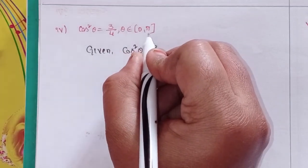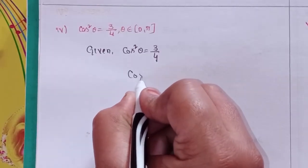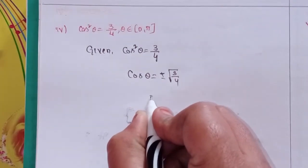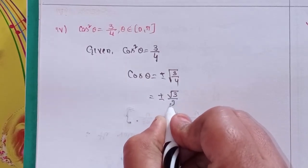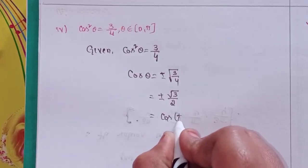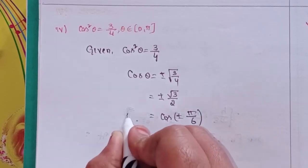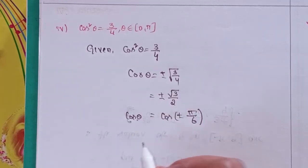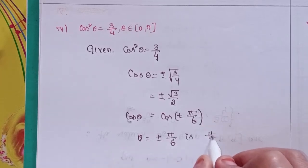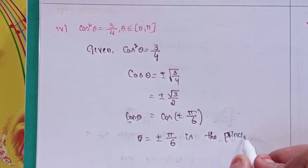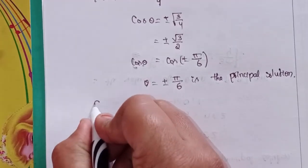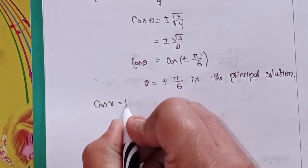Fourth one: given cos²θ = 3/4, where θ belongs to 0 to π. So cos θ = ±√(3/4) = ±√3/2. We write this as cos(±π/6). So cos θ = cos(±π/6), which gives θ = ±π/6 as the principal solution.